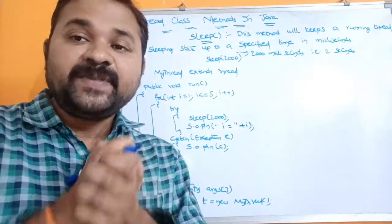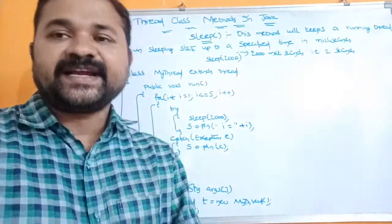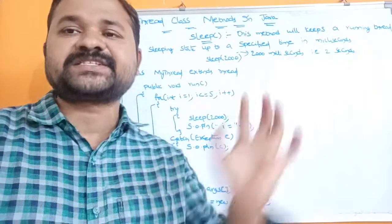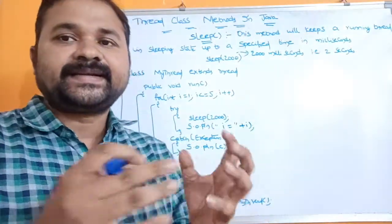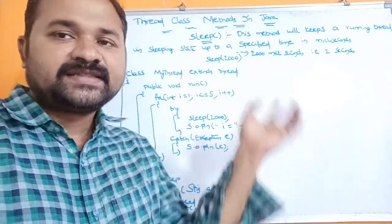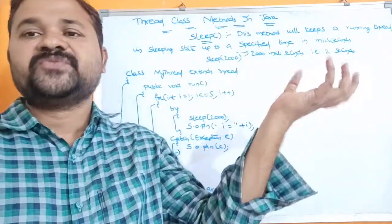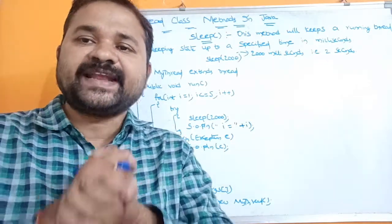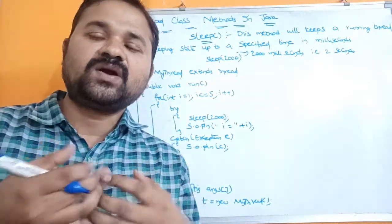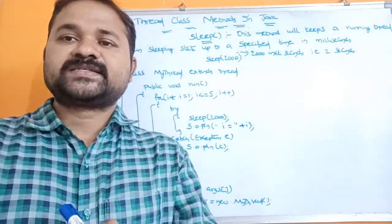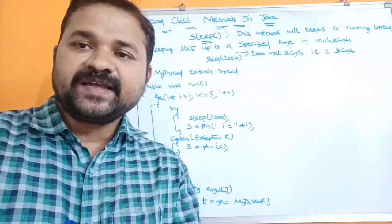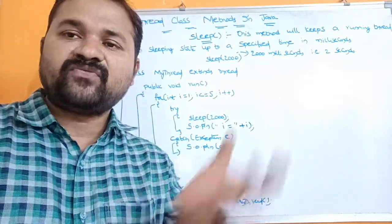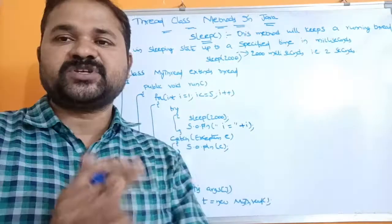Whenever the sleep method is executed, the corresponding thread will be in a sleeping or blocked state for the specified time in milliseconds. Once that time expires, the thread execution will be resumed and restarted. The sleep method throws an exception, so if you want to use the sleep method in a program, you must handle the exception using try-catch or by throwing it from the method.